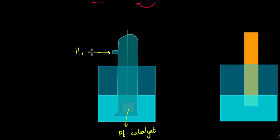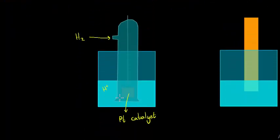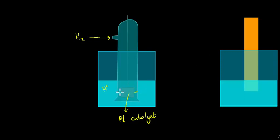Hydrogen gas is passed into a test-tube shaped container. In the solution we have hydrogen ions — this is an acidic solution, specifically a one molar solution. When hydrogen is passed in, it pushes the electrolyte level down inside the test tube.